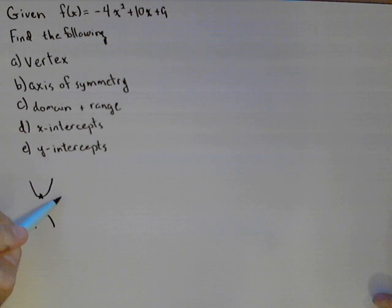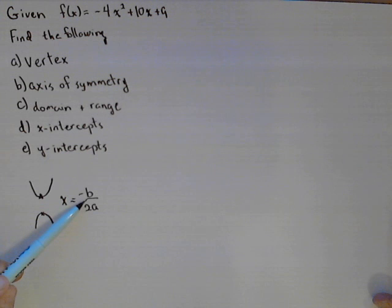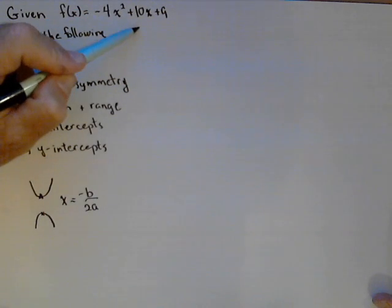And we have what I like to call the vertex formula, which is that x equals minus b over 2a. If you want to see where this comes from, look at the video on deriving the quadratic formula. So negative b over 2a is going to give us the x-coordinate of the vertex. So we have to identify b and a in our quadratic.